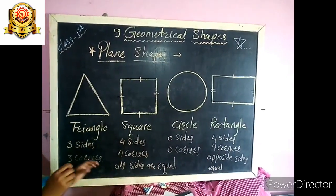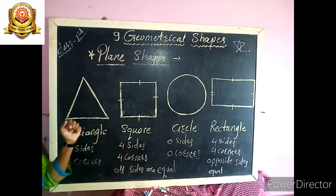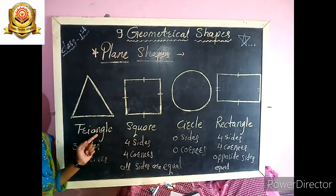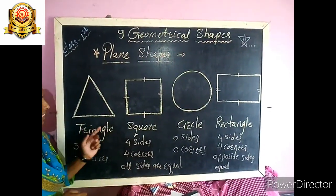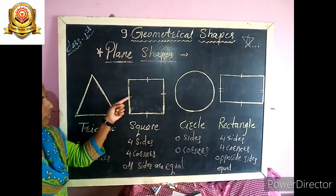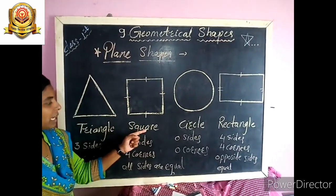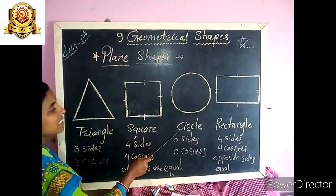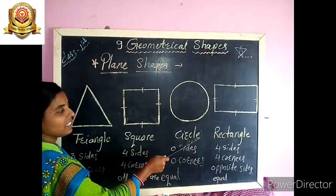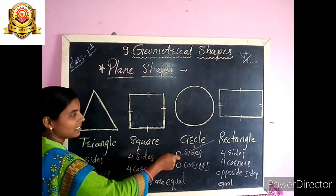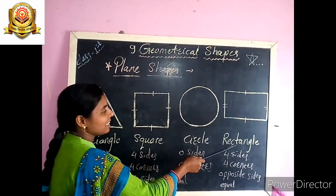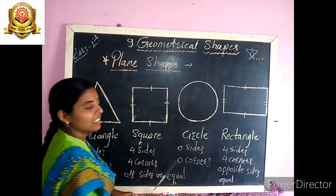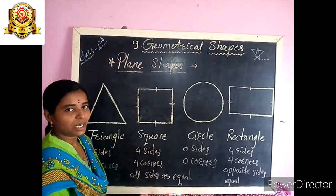Now students, we have 4 shapes. First one: triangle — T-R-I-A-N-G-L-E. Then square — S-Q-U-A-R-E. Then circle — C-I-R-C-L-E. And rectangle — R-E-C-T-A-N-G-L-E. Learn all the spellings of shapes.